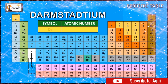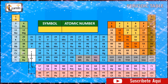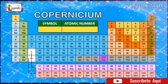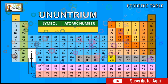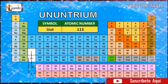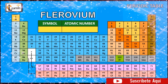The element darmstadtium is represented as Ds and has an atomic number of 110. The element roentgenium is represented as Rg and has an atomic number of 111. The element copernicium is represented as Cn and has an atomic number of 112. The element ununtrium is represented as Uut and has an atomic number of 113. The element flerovium is represented as Fl and has an atomic number of 114.